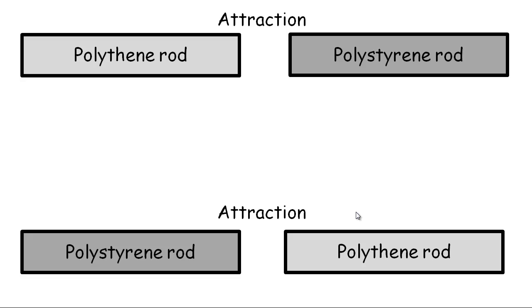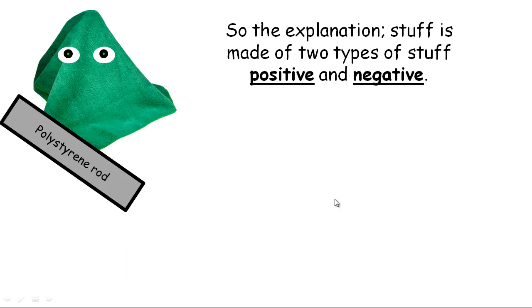So we need a model to explain this. And the model, or the explanation, is that stuff is made of two types of stuff, positive and negative. It gets a bit confusing to say stuff is made of stuff. So we call the stuff that's positive and negative charge. So stuff is made of positive and negative charges.